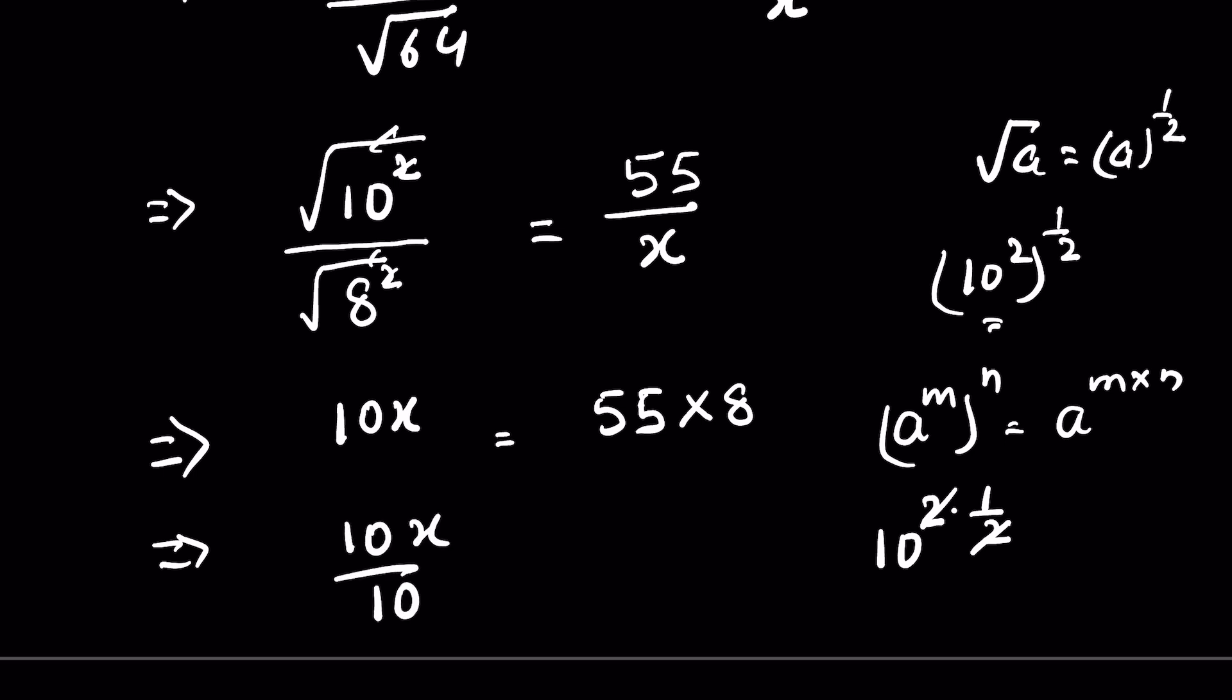Let's divide both the sides by 10. This is called reciprocal action. 10 times x, divide it by 10, and to balance the equation we do the same thing on the right hand side also, divide it by 10. Because if we do the same action both sides, the equation remains same. 10 and 10 gets cancelled here.